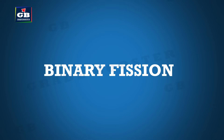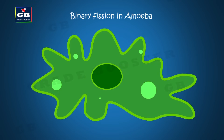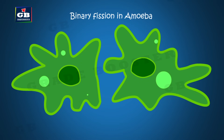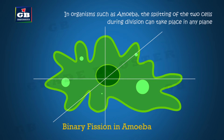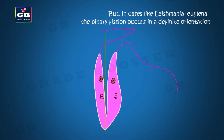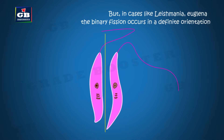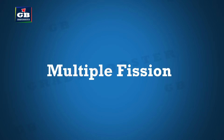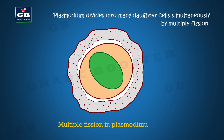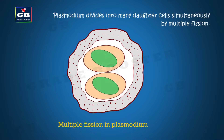The first mode of asexual reproduction is binary fission. Binary fission means splitting into two. Amoeba, a single-celled organism, reproduces by splitting into two — it can split in any direction because it has no specific shape. But organisms like Leishmania split in a specific direction as they have a specific shape. Multiple fission means splitting into many; some single-celled organisms like Plasmodium divide into many.